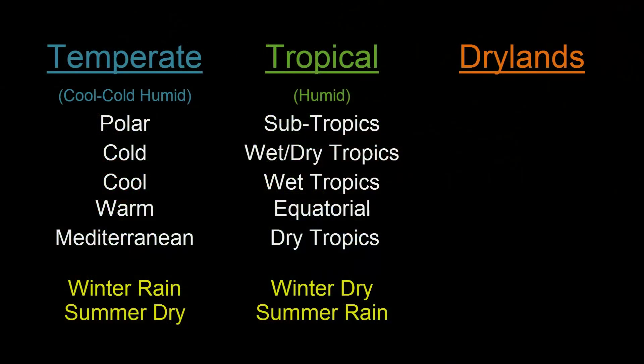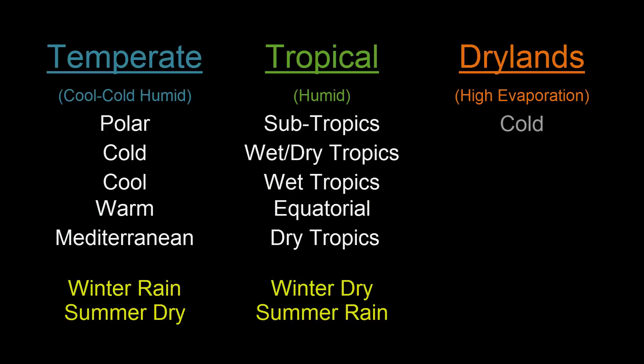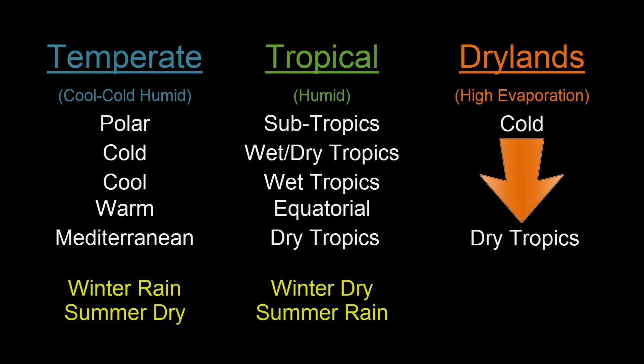Next we can transition from our dry tropics into dry lands. Dry lands mostly have high evaporation, though there are areas where that's not the case, but they can range everywhere from cold climates to the hot tropical areas.